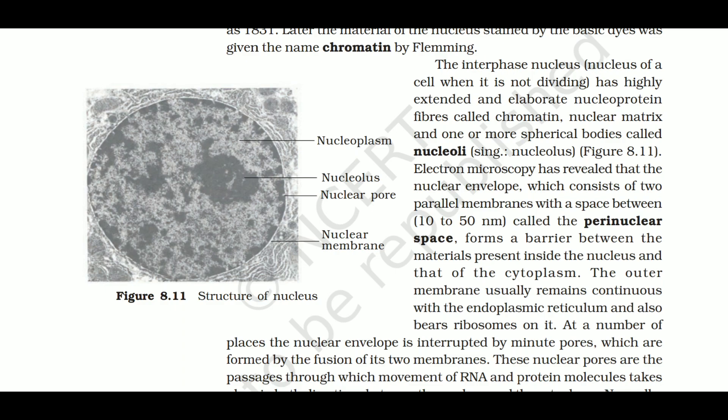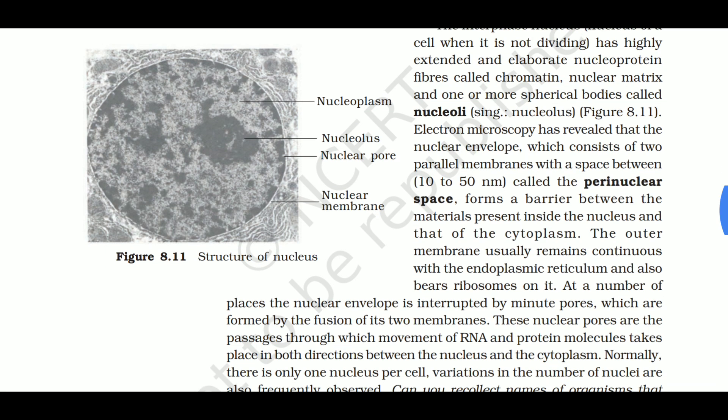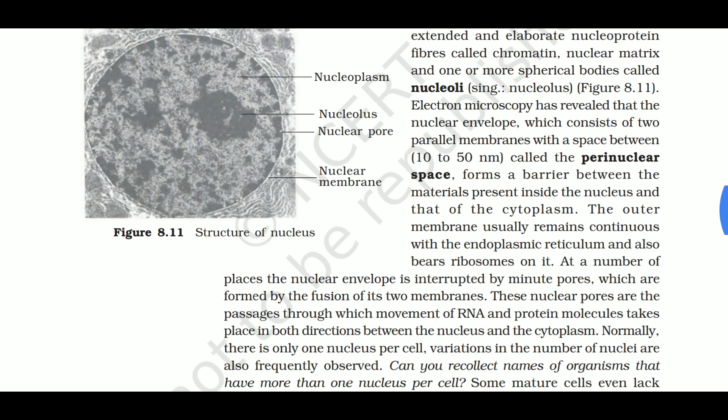The interphase nucleus has highly extended and elaborated nuclear protein fibers called chromatin, the nuclear matrix, and one or more spherical bodies called nucleoli. Ribosomes are produced from the nucleoli.